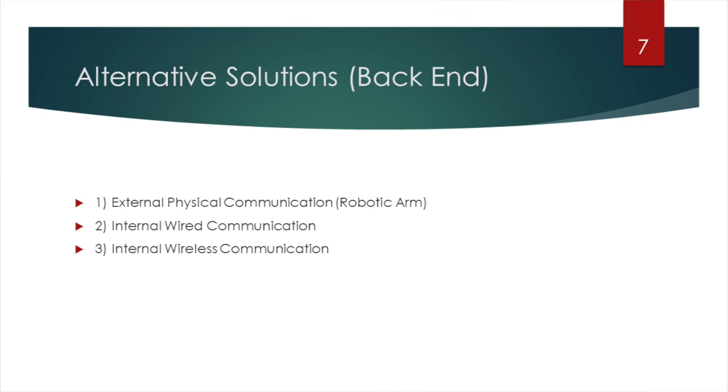For the back-end, we looked at several alternative solutions. The first was a robotic arm inside the elevator to physically push the button - this turned out to be quite costly and complex. The second was a wired communication system, but wiring into a moving elevator is complicated and costly. We ended up going with internal wireless communication: a server outside the elevator sends a signal via Bluetooth to a receiver inside the elevator that then makes the button selection.